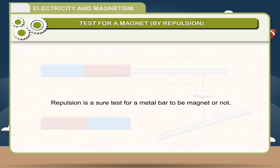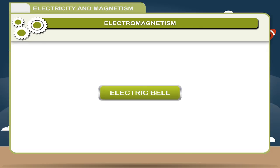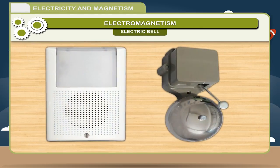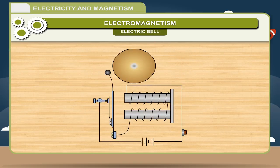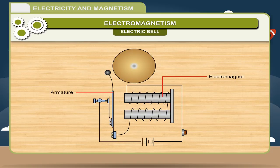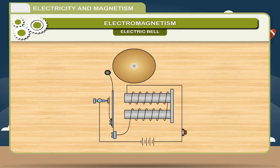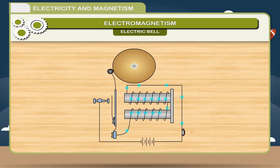Electric bell: One of the applications of an electromagnet is the doorbell or an electric bell. Its components are: an electromagnet, an armature, a soft iron bar mounted on a spring, a contact screw, a gong, and a hammer. When the switch is pressed, the current starts flowing in the U-shaped electromagnet, and the electromagnet attracts the armature coil of iron. The movement of the iron causes the hammer to hit the gong and the bell rings.